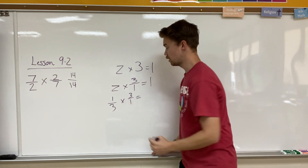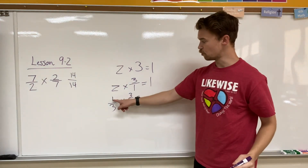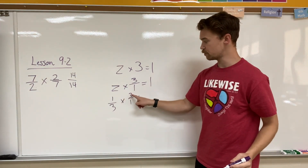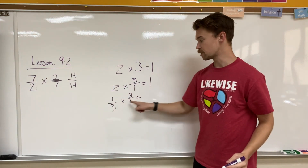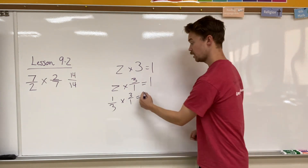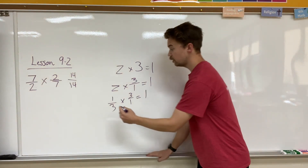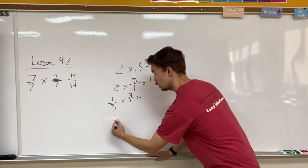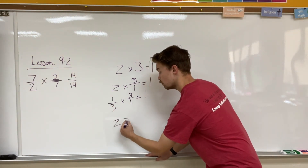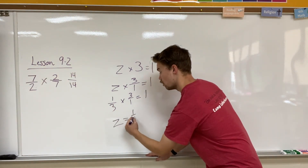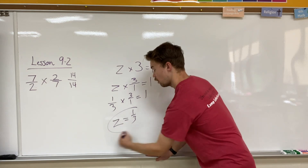Let's see — 1 times 3 is 3, and 3 times 1 is 3. That equates to 1. So Z equals 1 over 3.